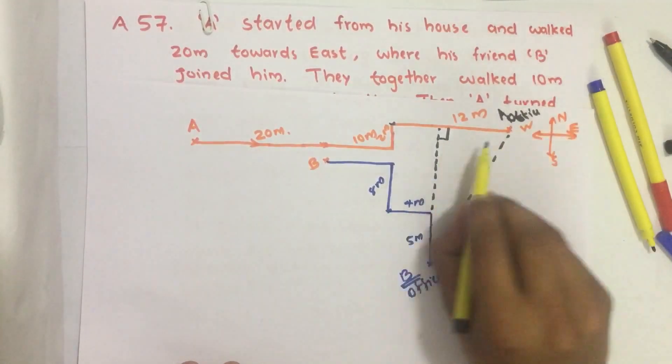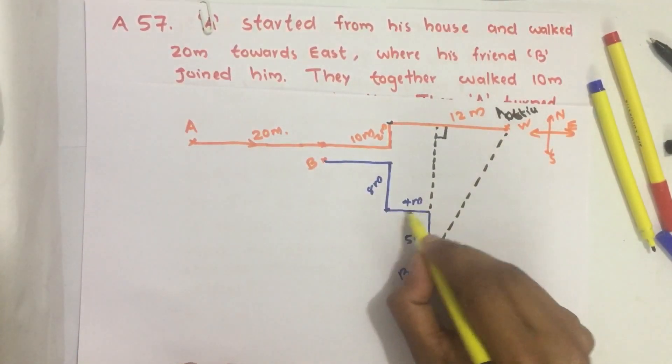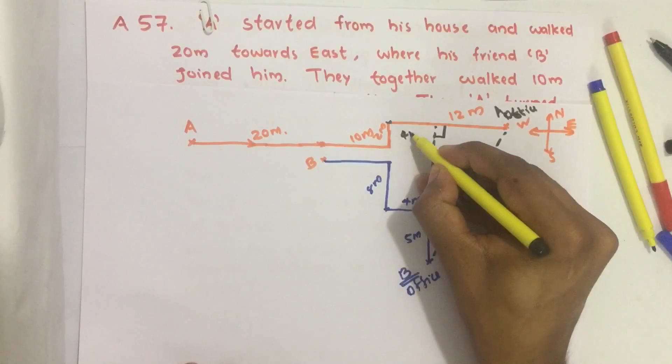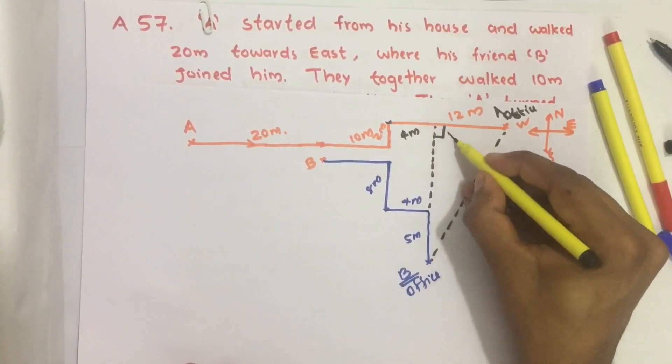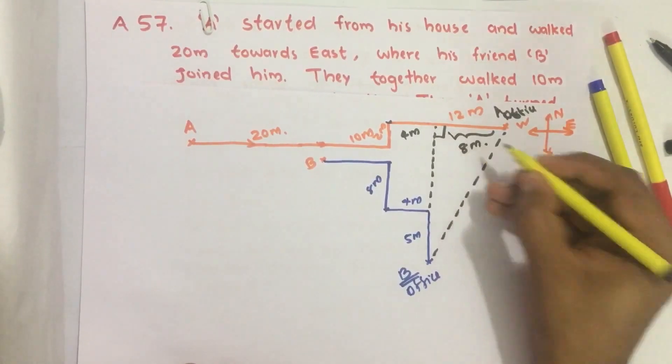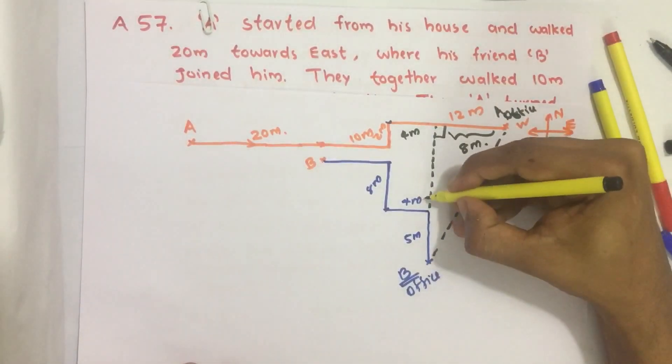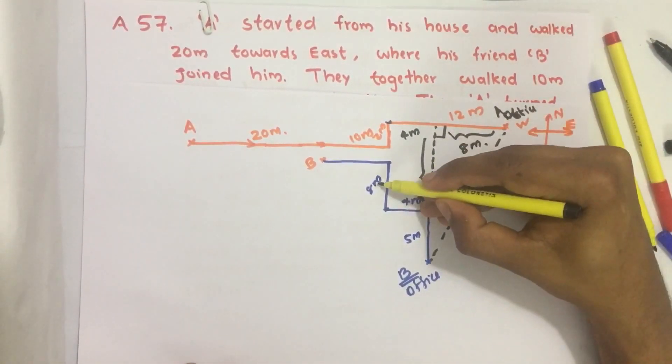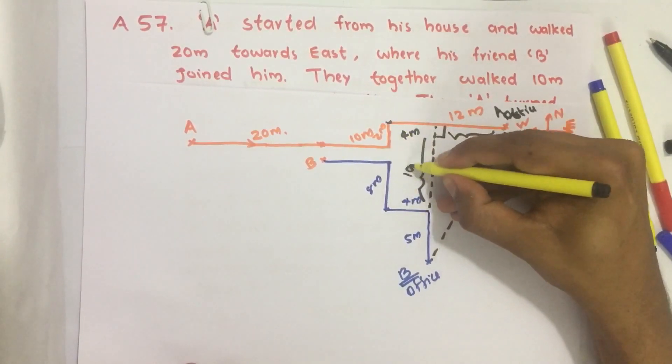So what is this distance? This is 4 meters. Therefore, this is also 4 meters. That is why this is 12 minus 4, we get 8 meters. This distance is 8 meters plus 2 meters, we get 10 meters.